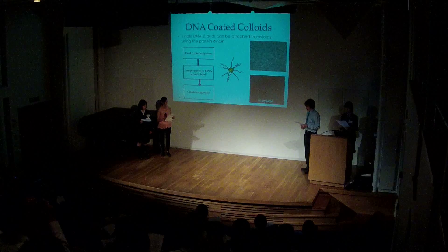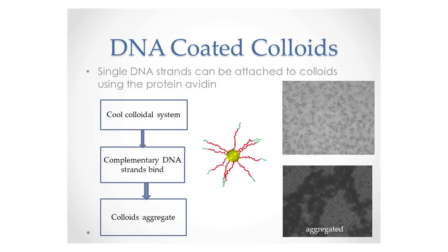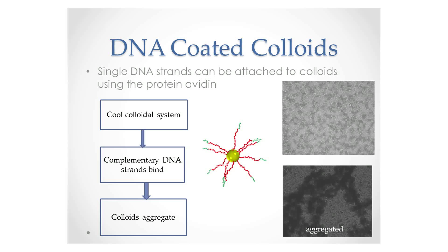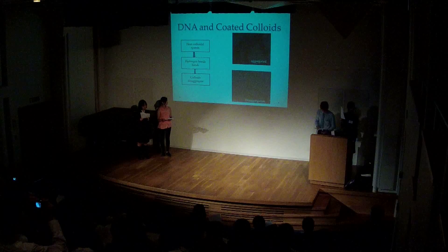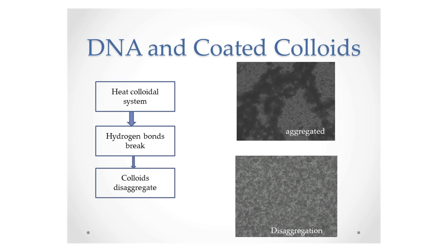On the first day we studied DNA-coated colloids. This is where DNA is bound to the colloid by biotin with an Aberdeen spacer, as shown in the diagram. When the colloidal system is cooled, the complementary strands of DNA bind together and aggregate. By ensuring some of our colloids were fluorescent, we were able to observe the aggregation and disaggregation of the colloids, which were only a few microns in diameter, using various methods of microscopy. If the colloidal system is heated to any temperature below 100 degrees centigrade, the colloids disaggregate as the temperature breaks the hydrogen bonds between the DNA base pairs.